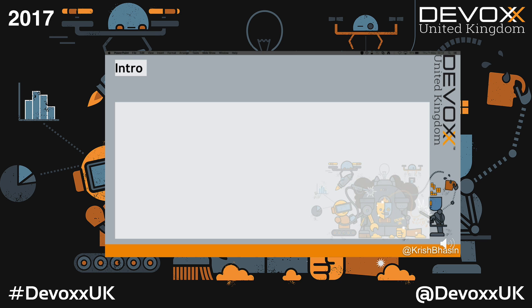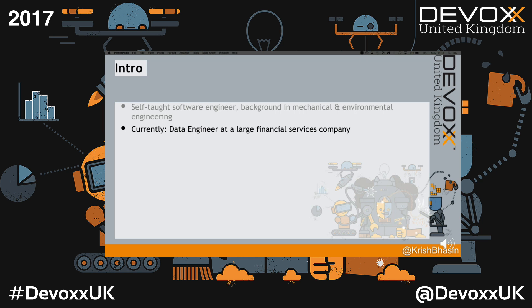To set a bit of context for the talk first: my name's Christian. I'm a self-taught software engineer with a background in mechanical and environmental engineering. I spent a lot of time looking at energy policy. I currently work as a data engineer at a large financial services company building out data ingestion systems in the cloud. I've previously worked as a data scientist, a general software engineer, and in the cloud architecture team — I've been very lucky to rotate around really diverse areas. My journey started from a place where I didn't know what Jenkins or Tomcat was, or what an API really meant. I've been through a really steep learning curve, and the steepest was in the data science and machine learning team because the start was very dense and inaccessible. This talk is aimed at addressing that.